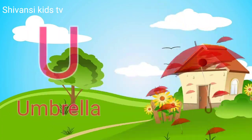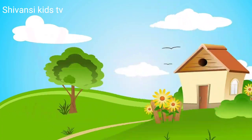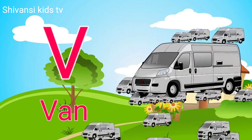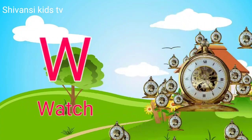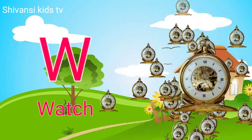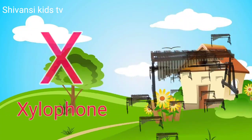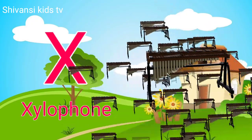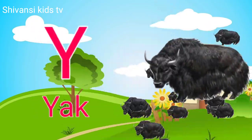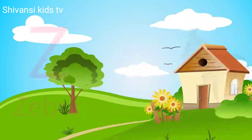U for umbrella, B for band, W for watch, X for xylophone, Y for yard.